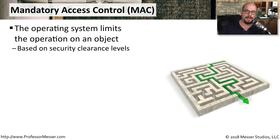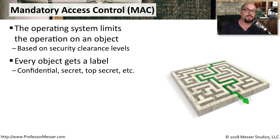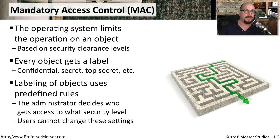One type of access control is Mandatory Access Control, or MAC. This means the operating system provides the limits on how much access someone will have to a particular object, and these are usually based on certain clearance levels. Every object that someone may need to access needs to be assigned a label — either confidential, secret, top secret, or some other type of label. Certain users can access confidential objects, while others may be able to access top secret objects. It's the administrator that determines what specific access role a particular user has, and users generally cannot change any of these access roles under a mandatory access control model.